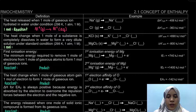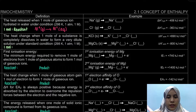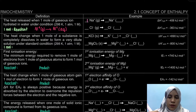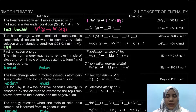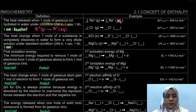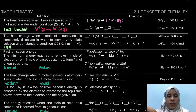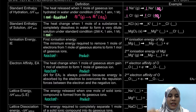Since the definition says heat is released, our ΔH must have a negative sign. For the hydration of sodium: one mole of Na⁺(g), once hydrated in water, becomes one mole of Na⁺(aq). It also applies to anions — for example, one mole of Cl⁻(g) hydrated in water becomes Cl⁻(aq). That is the hydration enthalpy.